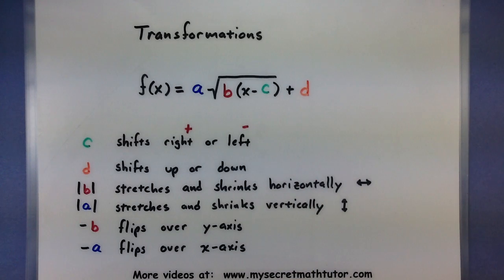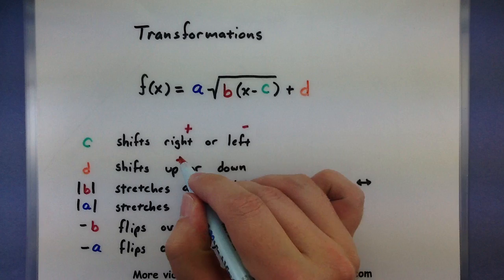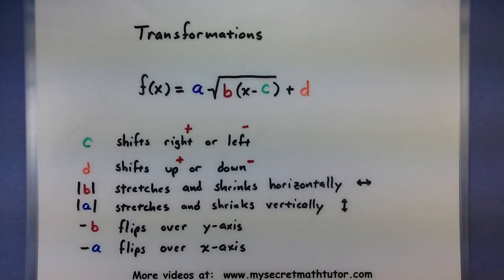This d value out here will shift it up and down. So if d is positive it's going to go up. If d is negative then it will go down. So that's going to change the location of maybe where that key point is and the rest of the graph.